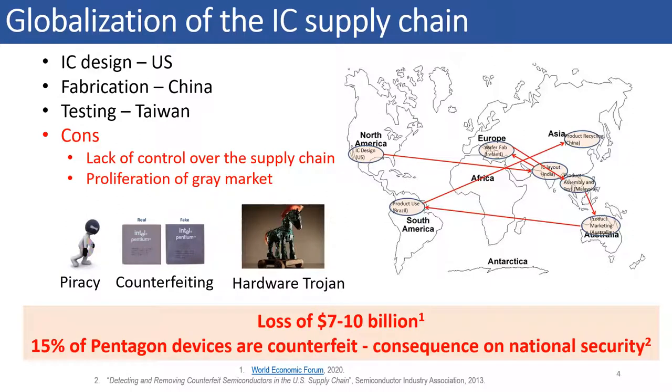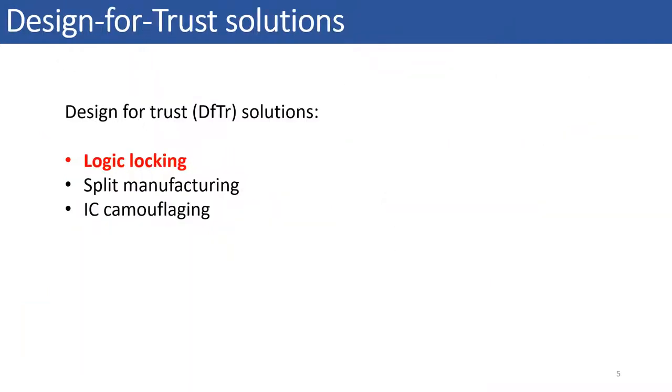It has been reported that around 15% of Pentagon devices are counterfeit and that it has cost 7 to 10 billion dollars as a result of IP piracy. In this work, we focus on the threat of IP piracy and the solutions proposed to safeguard against this threat. Several design for trust solutions have been proposed to thwart IP piracy attack, amongst which logic locking is a holistic solution that protects against multiple untrusted entities such as foundry, test facility and end users in the IC supply chain.